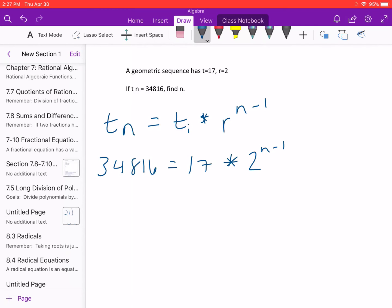So first things first, let's get rid of that 17. If we divide both sides by 17, we're left with 2048 equals 2 to the n minus 1.